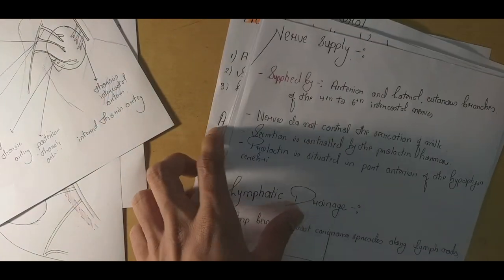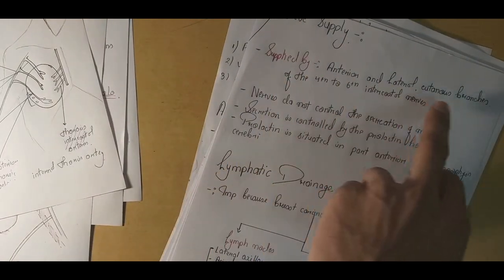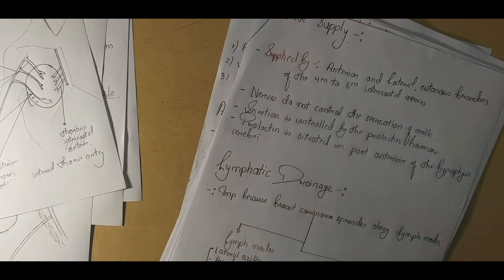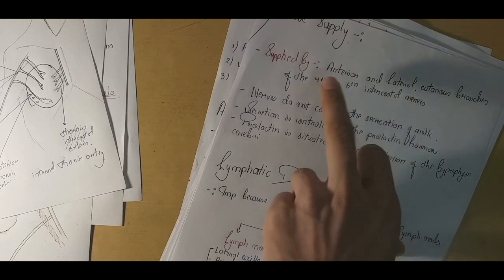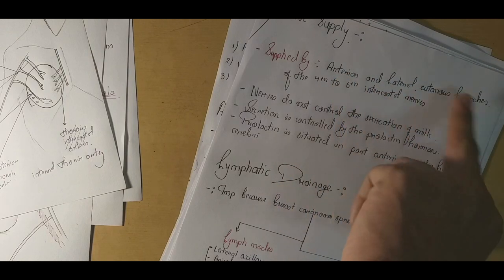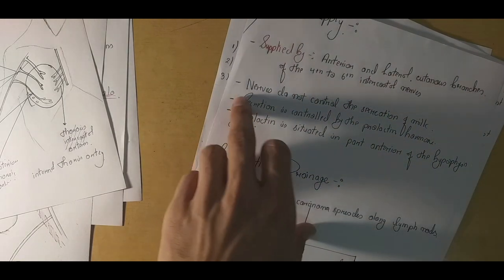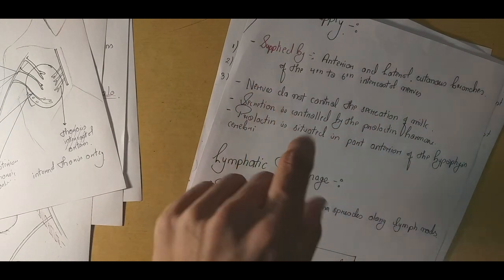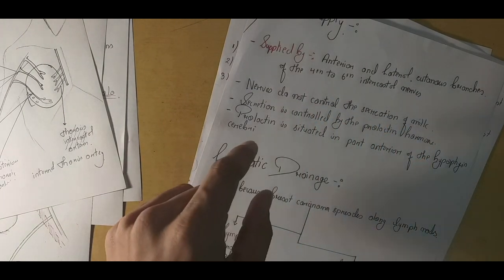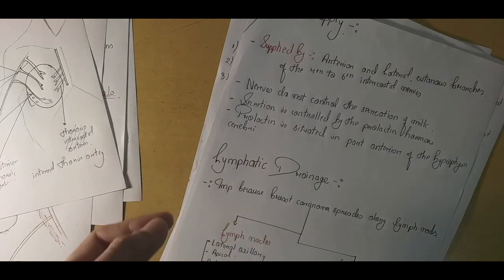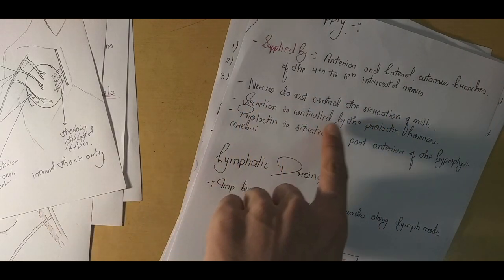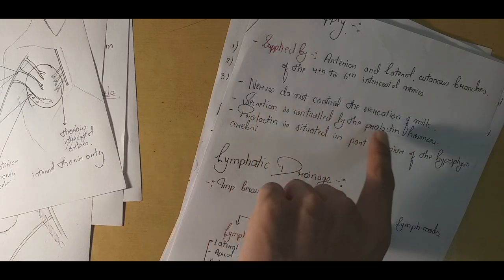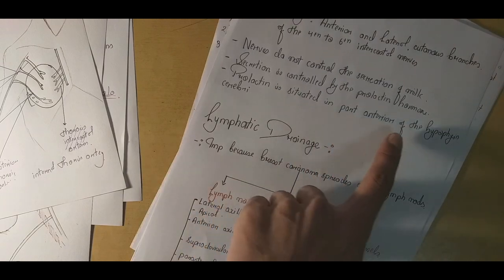The nerve supply is provided by the anterior and lateral cutaneous branches of the fourth to sixth intercostal nerves. These nerves do not control secretion of milk - they control only the sensory sensation of the mammary gland. Secretion of milk is controlled by the prolactin hormone, which is situated in the anterior part of the hypophysis cerebri.